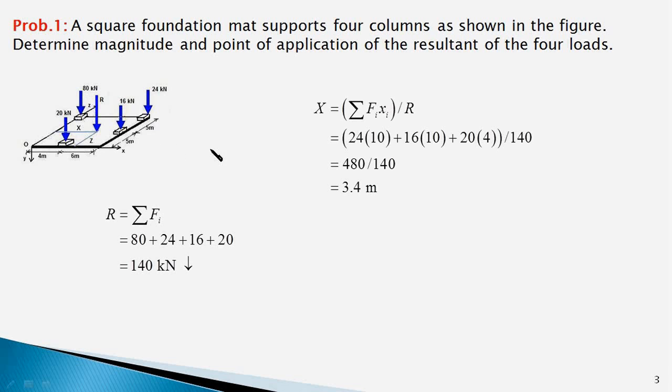So, we have these three terms which represent the moments of all the forces about the Z axis and divided by the magnitude of the resultant would give us X, the x-coordinate of the point of application of the resultant and that is equal to 3.4 meter.